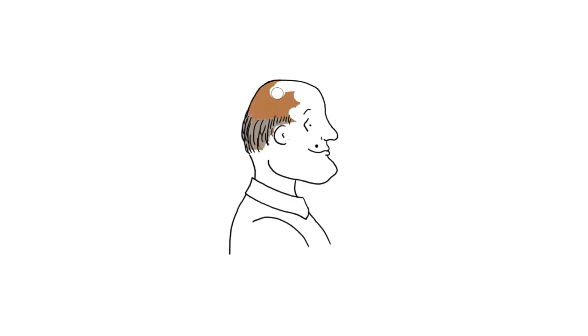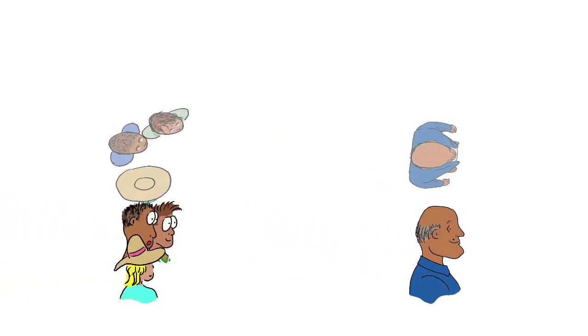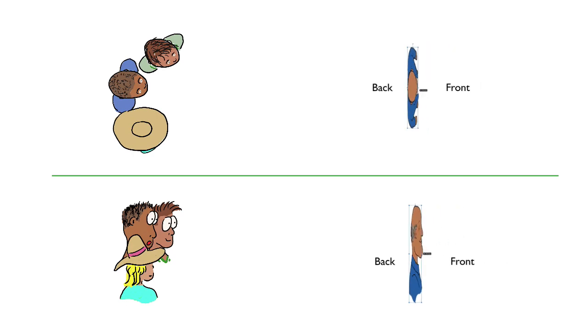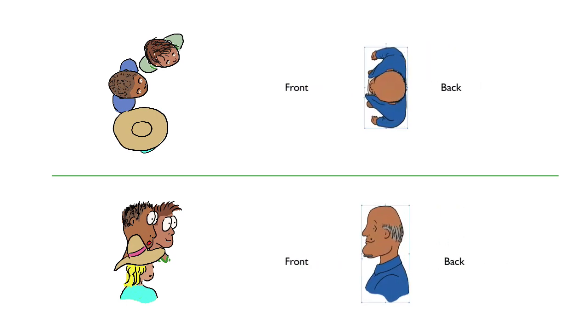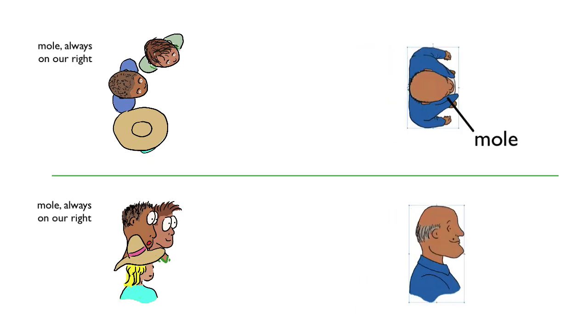Consider Joe, who everyone knows has a mole on his right upper lip. Now, let's invert Joe along the front-back axis, which is kind of like turning him inside-out. Or better to say, front-side-back. From our point of view, the mole stays toward the right throughout the transformation.